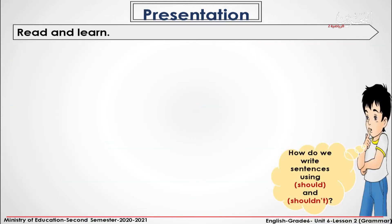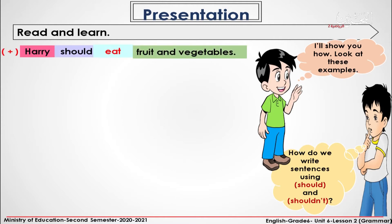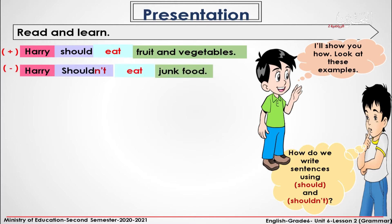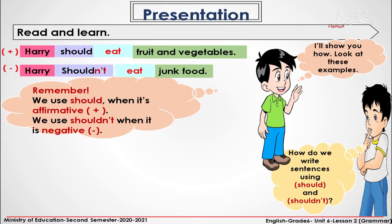How do we write sentences using should and shouldn't? I'll show you how. Look at these examples. Harry should eat fruit and vegetables. Harry shouldn't eat junk food. Remember, we use should when it's affirmative, and we use shouldn't when it is negative.